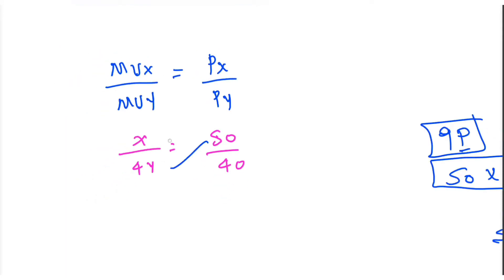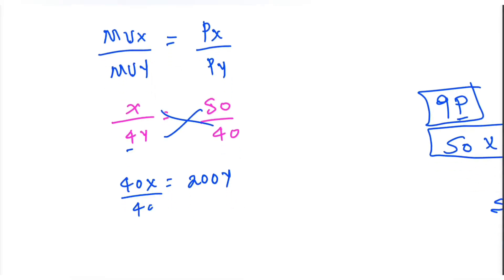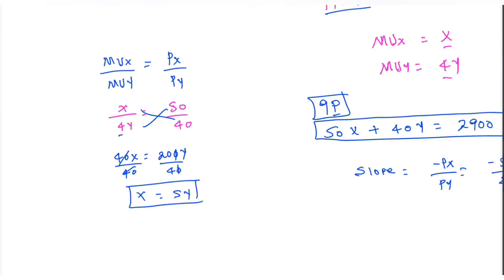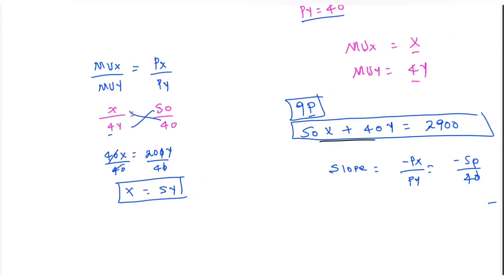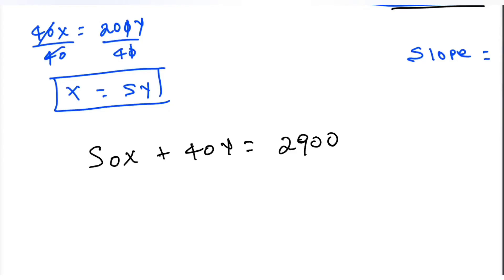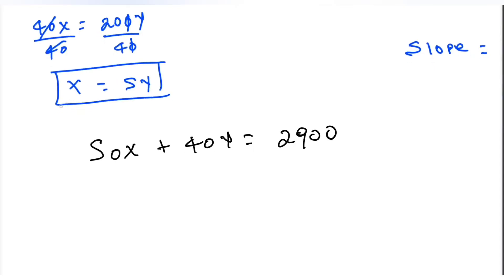Cross-multiplying gives 4x equal to 5 times 4y, which simplifies. Substituting x equal to 5y into the budget equation: 5x plus 4y equals the total budget. This gives us the equilibrium position where optimum quantities are determined.